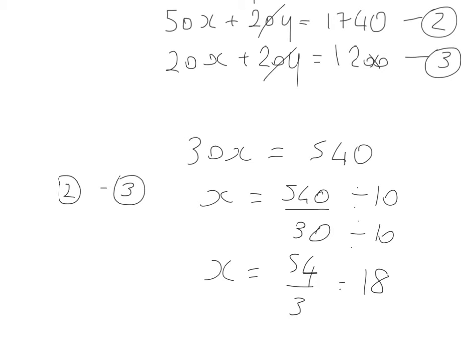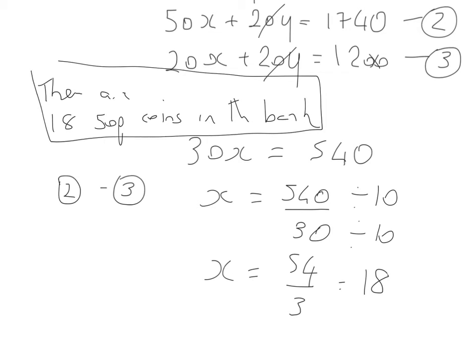So pretty straightforward, x is equal to 18. Now at this point I'm just looking to explain my answer. And there are 18 fifty-pence coins in the bank. And at that point the examiner has asked you a question, so they'll be looking for you to give an answer down and an explanation. And that's the end of the question.